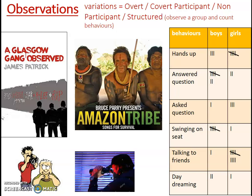That's covert participant observation. No one else in the gang knew he was a researcher, but he was able to gain quite useful information about that group that you couldn't really have obtained using any other method, because they're not going to fill out a questionnaire on why they commit crime.